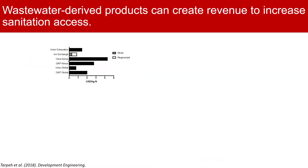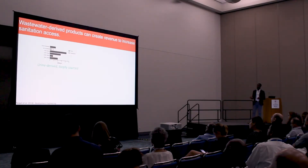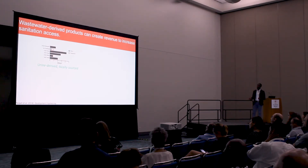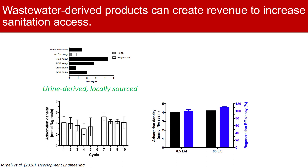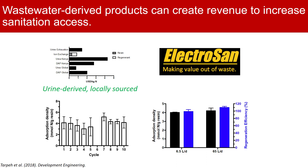We think a lot about resource-constrained communities — this is actually how I first got interested in this work, thinking about limited access to sanitation for billions of people around the world. We've applied our ion exchange techniques with a partner in Kenya and shown that urine-derived fertilizers are locally sourced, which matters because most fertilizers have to be imported into Kenya. Our ion exchange process is 70 to 80% cheaper to produce than importing fertilizers. We also looked at repeat performance over time and scaling up tenfold from one toilet to ten toilets. This work is being spun out into a startup company called ElectroSan that partners with sanitation service providers around sub-Saharan Africa.